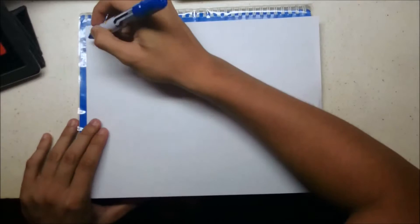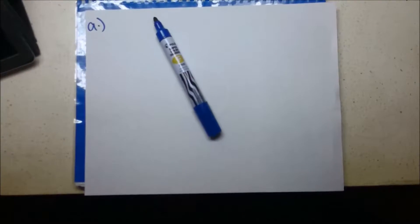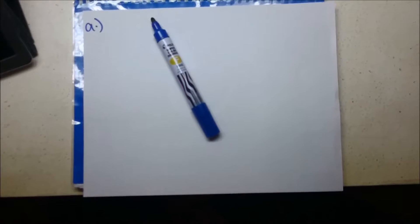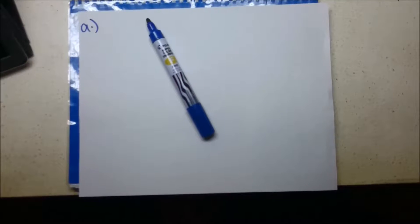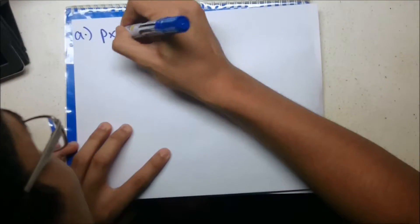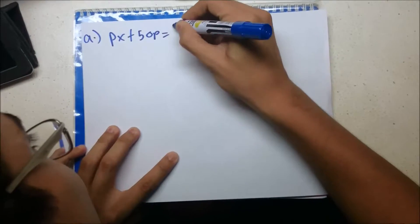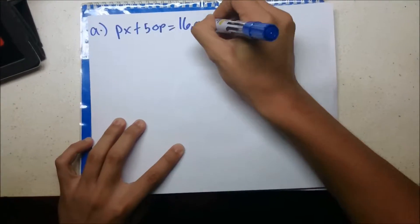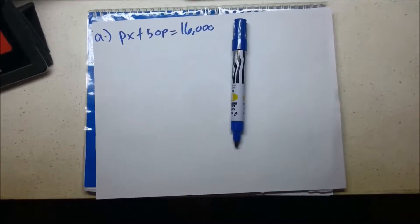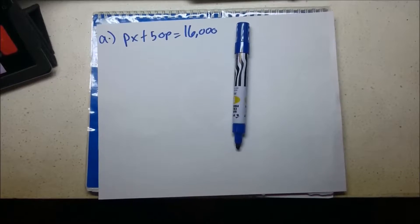We're doing letter A. The question for letter A is: the demand for a particular breakfast cereal is given by the demand equation Px plus 50P equals 16,000, where x thousands of boxes are demanded when P cents is the price per box.